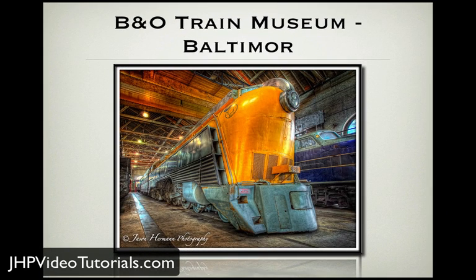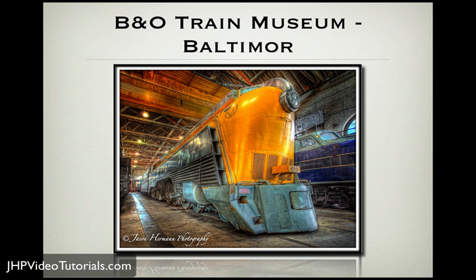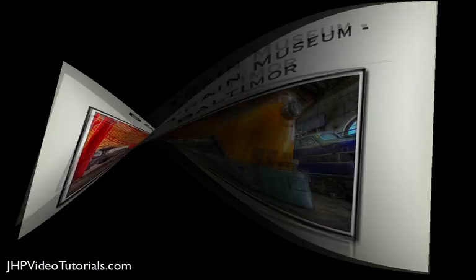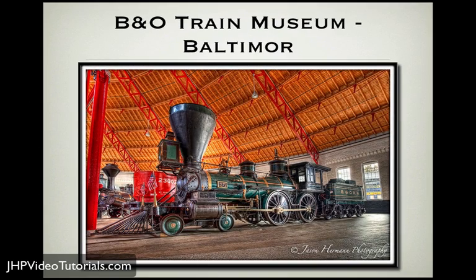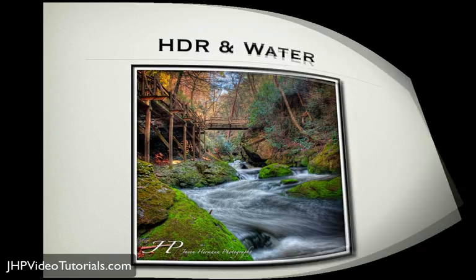Here's a few examples of HDR photography in practice. This was at the B&O Train Museum in Baltimore, and the dynamic range is such in this environment that the camera cannot capture everything with one click. So HDR photography was used, and multiple exposures were combined to create these images. Notice how the train looks good, and outside the windows also looks good — that's how you know it's probably HDR.